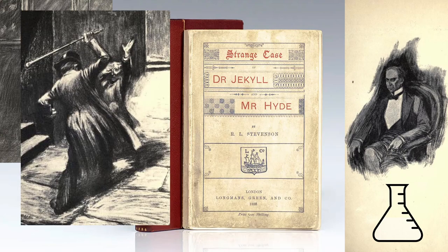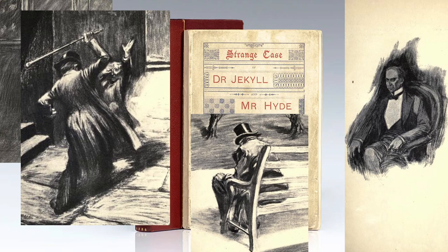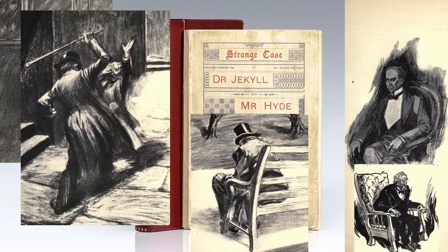After this, Dr. Jekyll stops taking the potion completely. However, one day, Jekyll was caught up in a narcissistic thought while daydreaming in a park, causing Dr. Jekyll to turn into Mr. Hyde in broad daylight. He is hunted by the police for the death of Sir Danvers Carew, needing the potion to turn back into Dr. Jekyll. He sent word to his friend Lanyon to break into his laboratory and bring him the ingredients needed to contrive the potion.